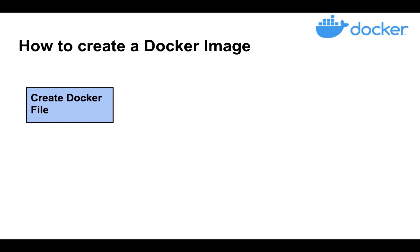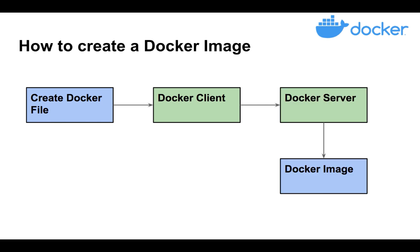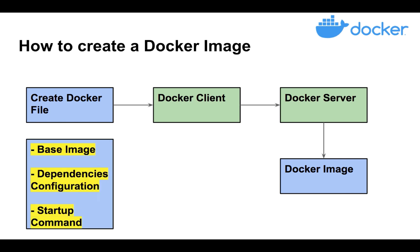After building the image, you build a container and run your container. Once you create a Dockerfile, you pass it to the Docker client. The Docker client in turn passes the file to the Docker server. The Docker server does its magic in the back end and creates a Docker image. A Dockerfile contains a base image, some dependencies and configuration required for your container, and a start command that specifies what commands run once your container is up.